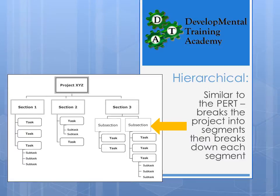On the final page is the hierarchical structure. You can see it's similar to the PERT chart in that it breaks the project into segments and then breaks down each segment into tasks, subtasks, and so on. This can be an excellent visual representation of a project — a great overview for management, contractors, and team members to utilise.